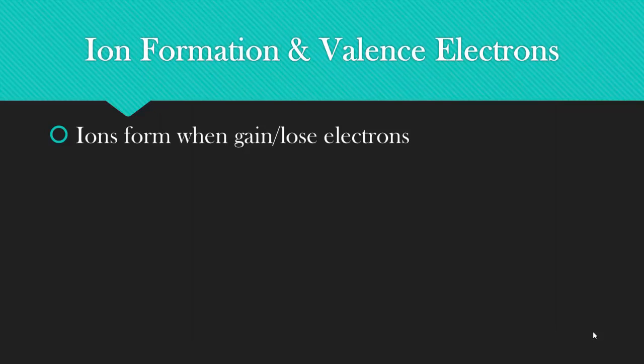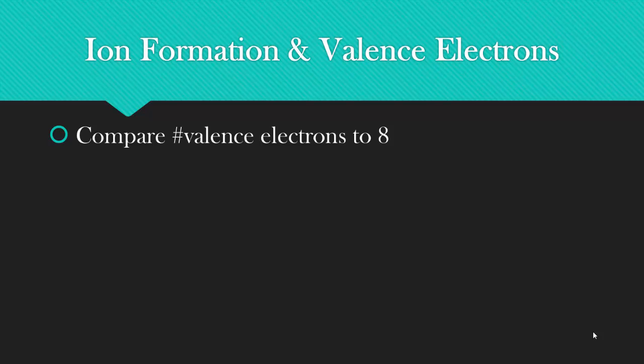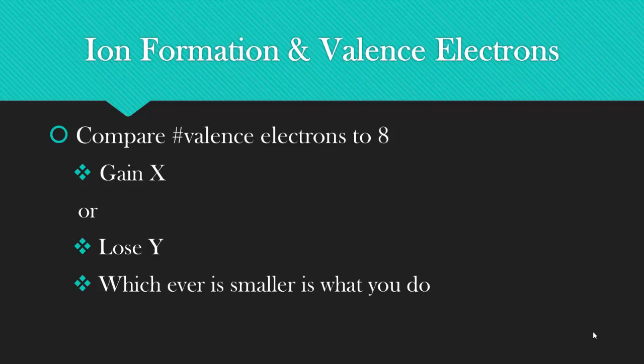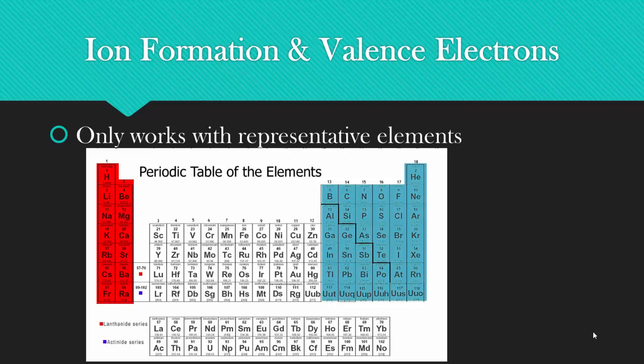Now remember, ions form when you gain or lose electrons. How do you know whether you gain or lose the electrons? What you will do is compare the number of valence electrons you have to the number eight. You'll either have to gain x electrons to get to eight, or you will have to lose y electrons to get to eight. Whichever value is smaller is what you're going to do. And this only works with the representative elements, which are the ones highlighted in red and blue.